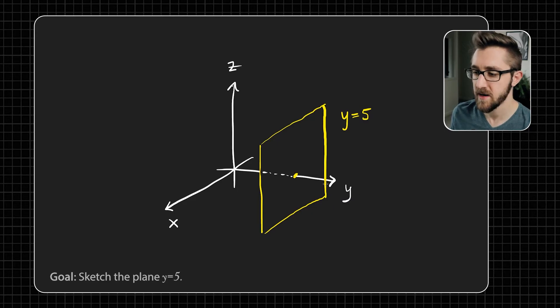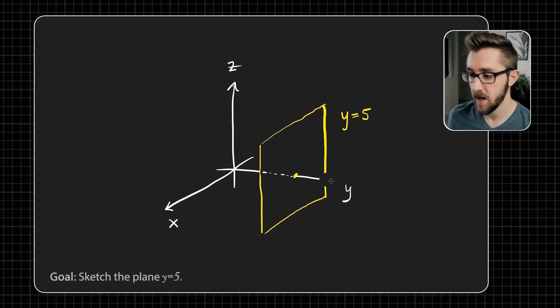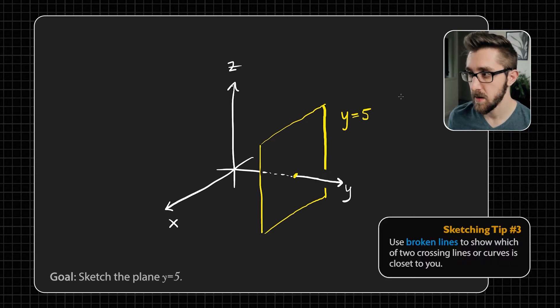And actually, that leads us to tip number three, because check out what's going on right here where this edge of the plane runs over the y-axis. In our 3D picture, the y-axis is actually closer to our eye than the back edge of this rectangle. So I'm going to redo this part of the picture. I'll erase what's going on here. And I'm going to draw it so that the y-axis is an unbroken line, and that back edge of the plane has a break in it where it passes behind the y-axis.